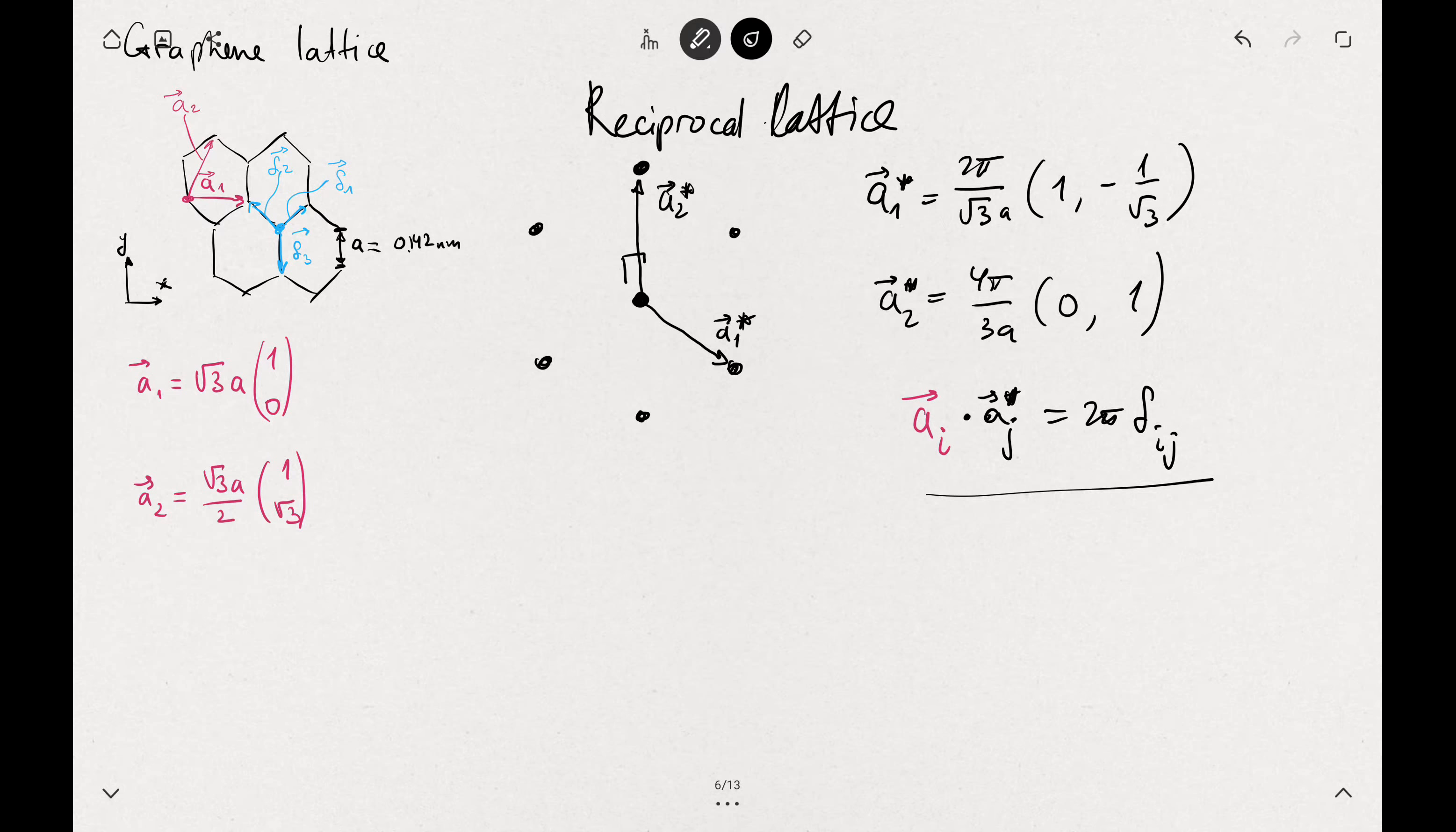And then you define the Brillouin zone. Similarly, as you define a unit cell in the real space, you have this Wigner-Seitz notation in the real space where you define those as the midsections. So you define it similarly here. It's kind of like copied multiple times.